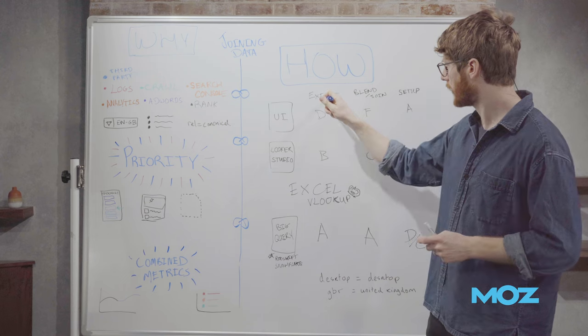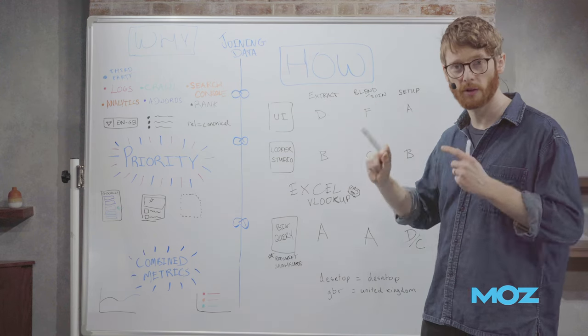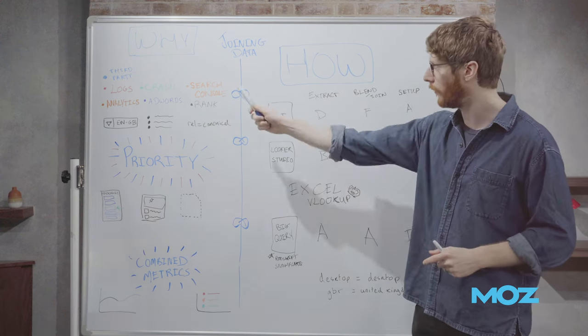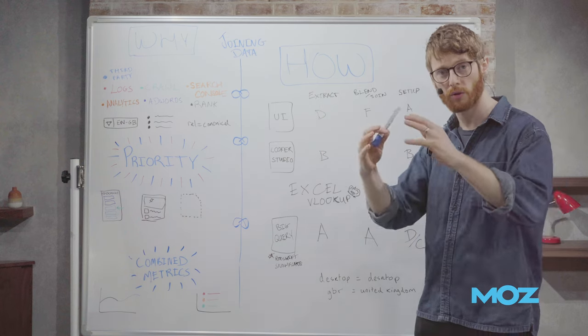Generically, the process that we're running is we're extracting data and then we're joining data. That's the two big things, right? We're taking data out of somewhere, so we've got multiple bits of it together, and then we're going to smush those two things together.